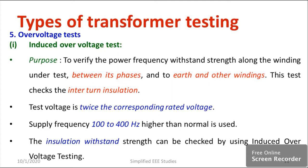Do remember these two conditions for induced overvoltage test: the voltage should be twice the rated value, and the frequency can be varied from 100 to 400 Hz. Under both conditions, no changes should happen in the insulation.